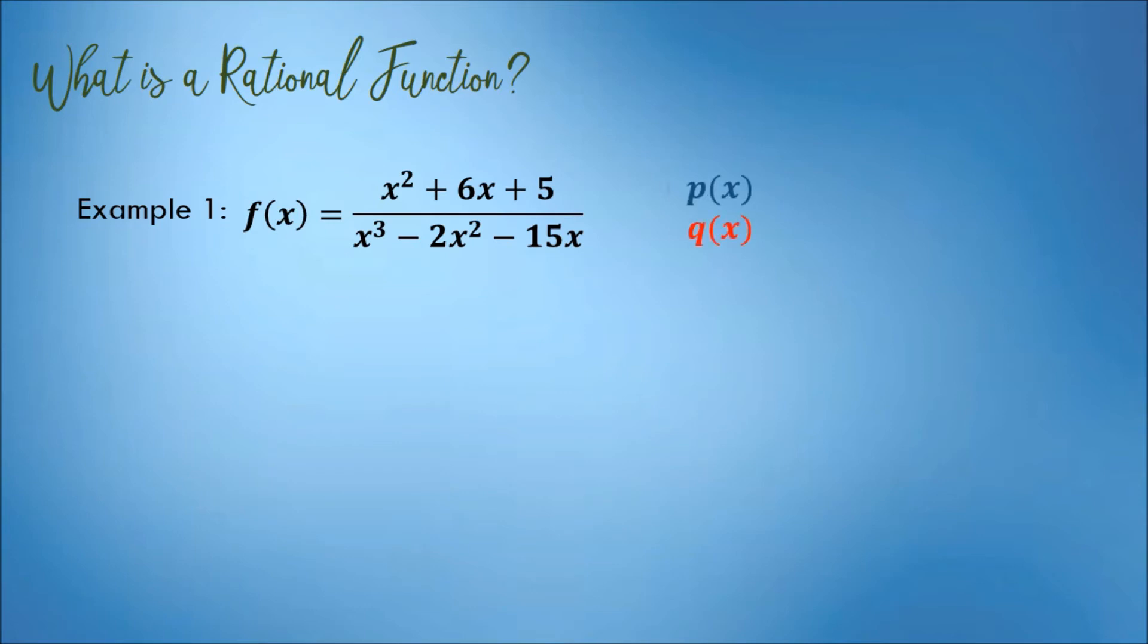This is a rational function because the numerator and denominator are both polynomial functions. The degree of the numerator is 2, while the degree of the denominator is 3.